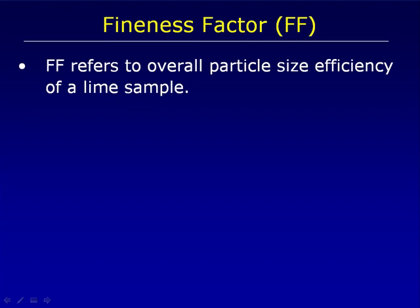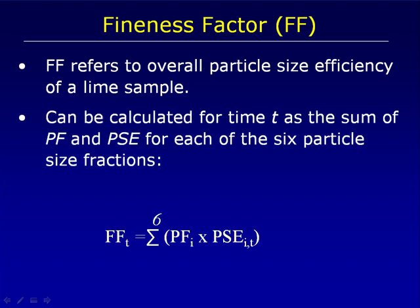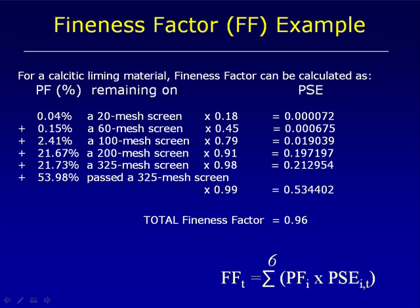The fineness factor refers to the overall particle size efficiency of all of the different size fractions in a lime sample. Calculated for time t — our standard time is seven days — it is the sum of the particle fractions multiplied by the particle size efficiency for each of six particle sizes. Here's an example where we have a certain distribution measured with our sieves, multiplied by our particle size efficiency factors. Adding up all of those numbers gives us, in this case, a particle size fineness factor of 0.96.